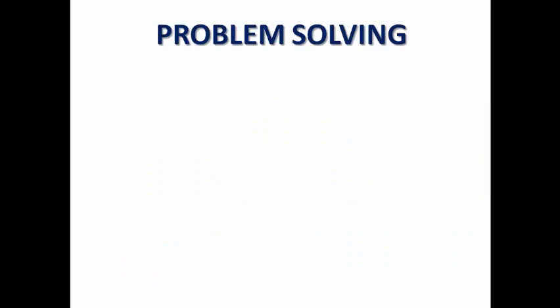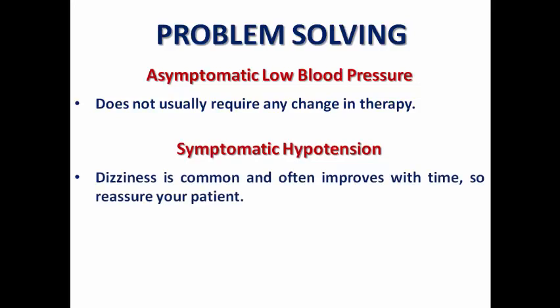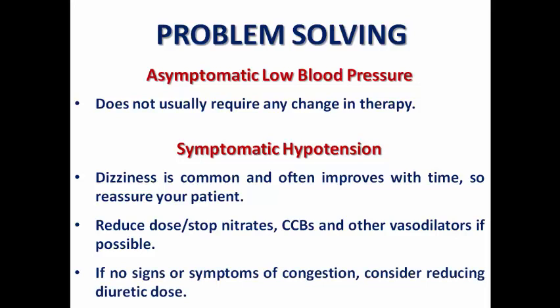Asymptomatic low blood pressure does not require any change in therapy — reassure the patient provided they are asymptomatic and clinically perfused. For symptomatic hypotension, it is common and often improves with time. If still symptomatic, consider reducing or stopping concomitant nitrates, stopping calcium channel blockers like amlodipine, or stopping other vasodilators. If there are no signs of congestion, consider reducing the diuretic dose to help raise blood pressure. Try all measures before deciding to stop the ACE inhibitor or ARB.